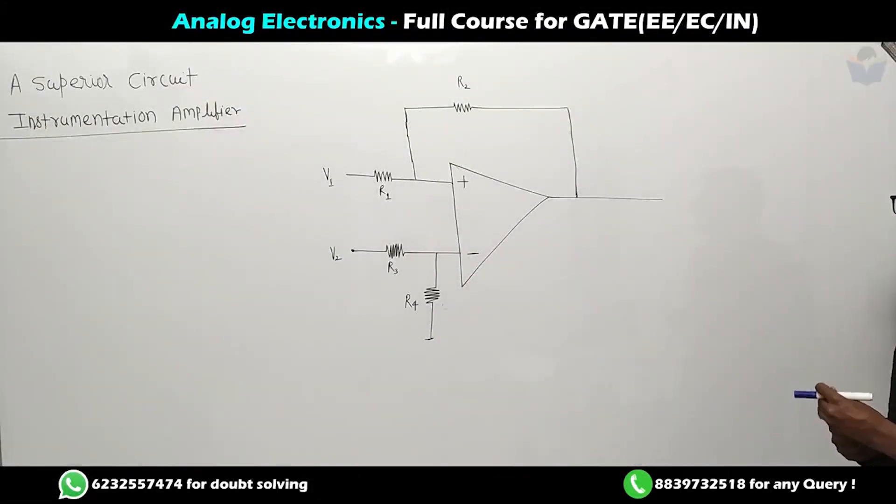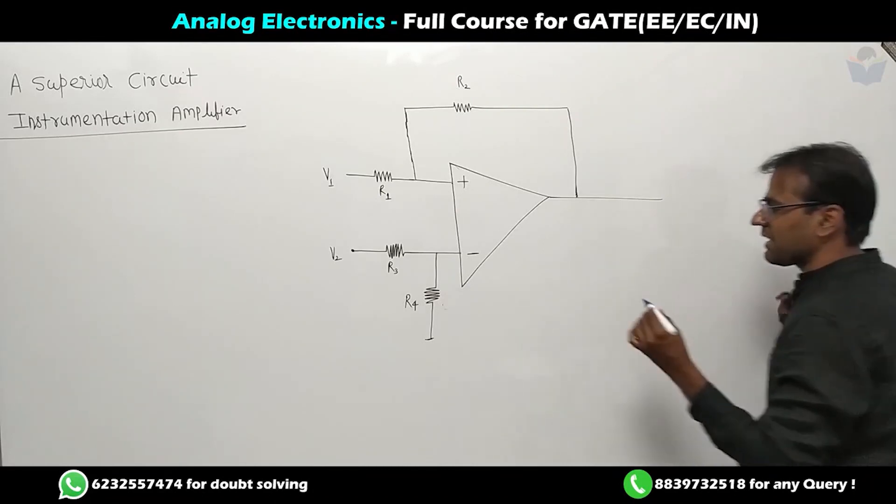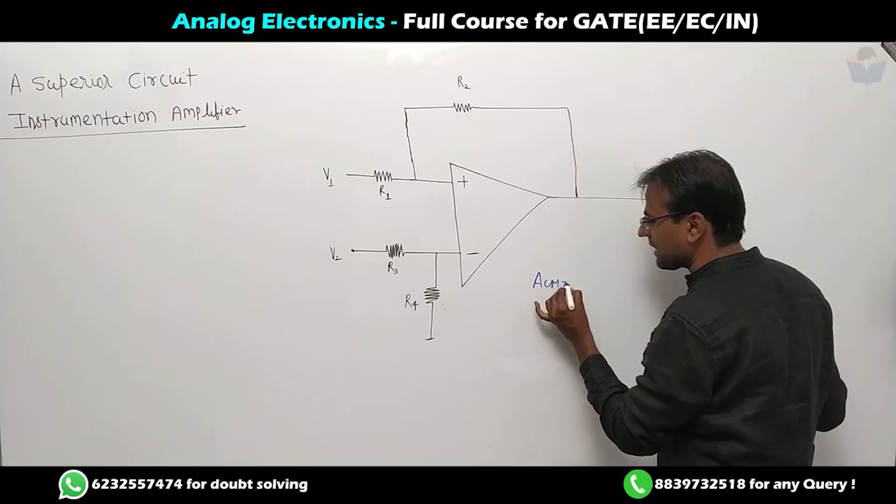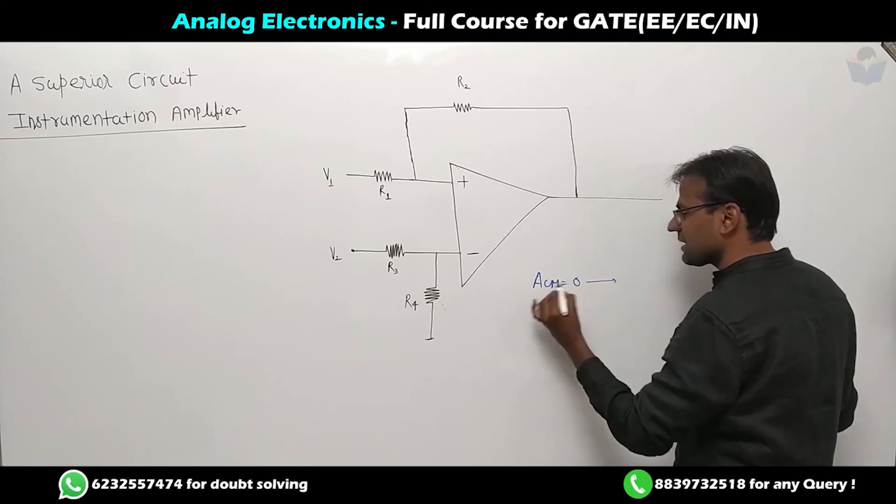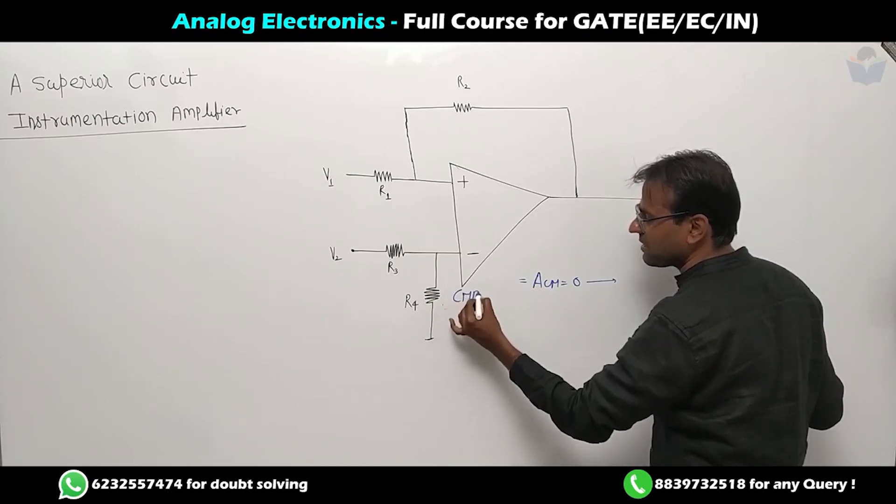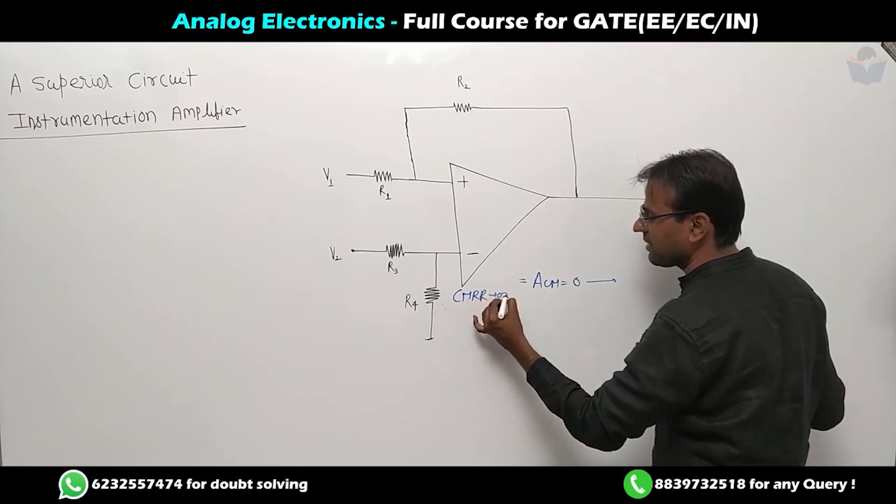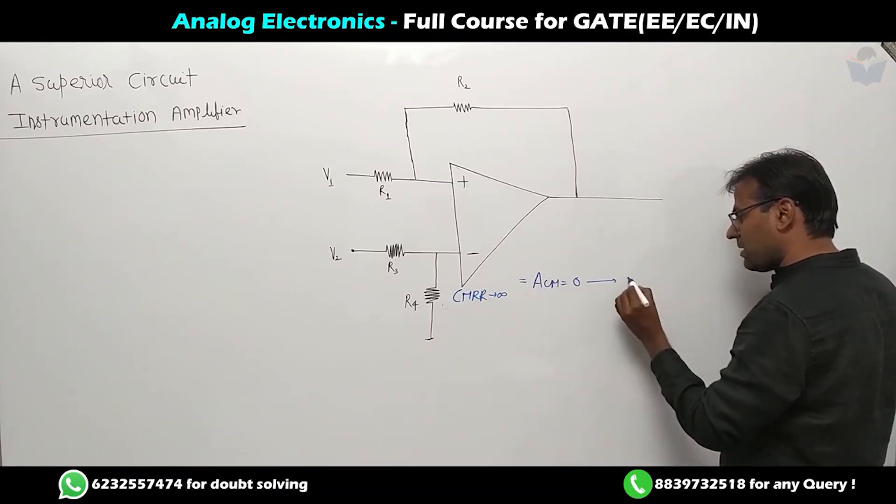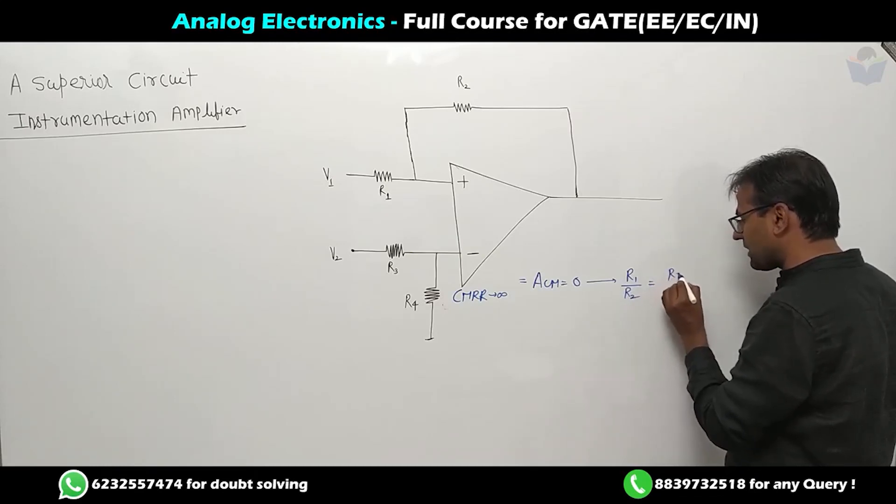We want CMRR infinite for this circuit, or I should say ACM equal to zero for this circuit. What is the condition? This is the same whether ACM equal to zero or CMRR infinite - these two represent the same thing. If you want ACM equal to zero, then R1 by R2 should be equivalent to R3 by R4.